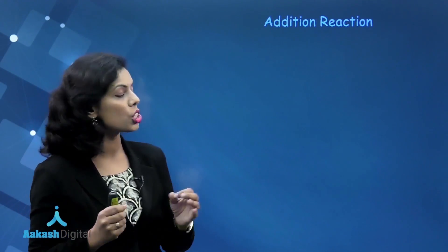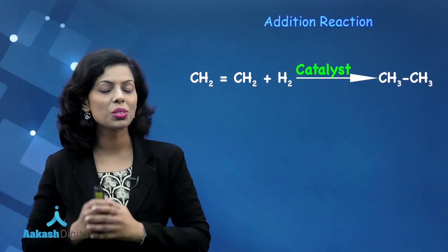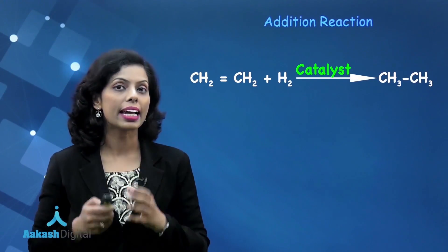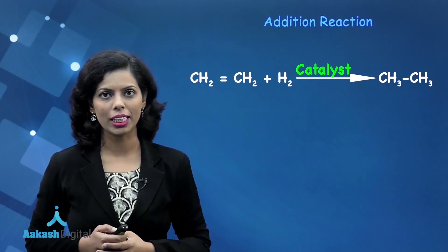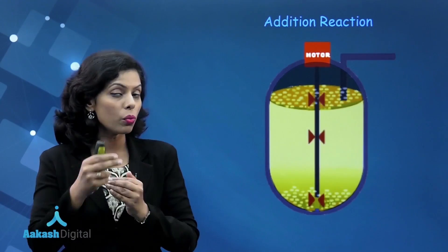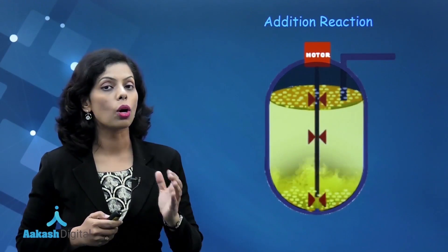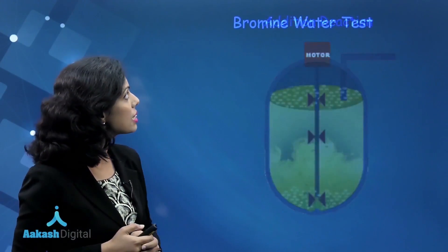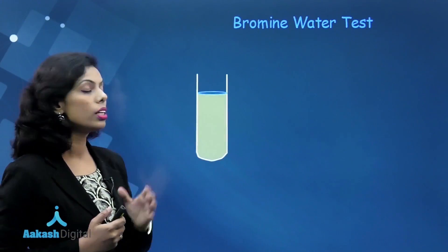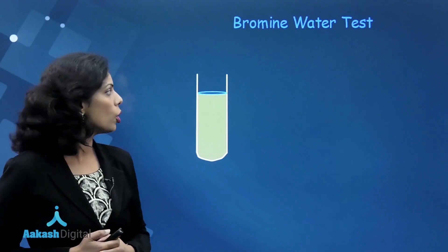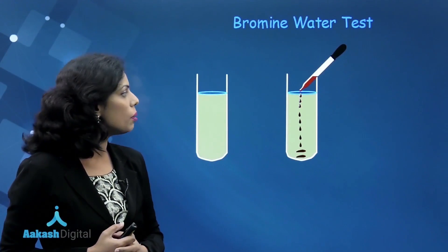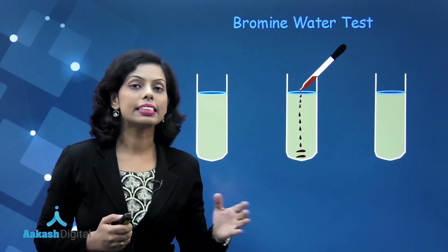We discussed the addition reaction — the conversion of unsaturated hydrocarbon into saturated hydrocarbon. We discussed the hydrogenation of oils to be converted into vegetable solid fat. Then we discussed the bromine water test: an unsaturated hydrocarbon has bromine drops added to it, and ultimately the color disappears.